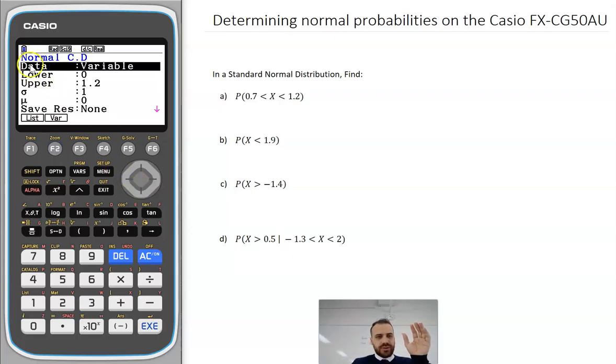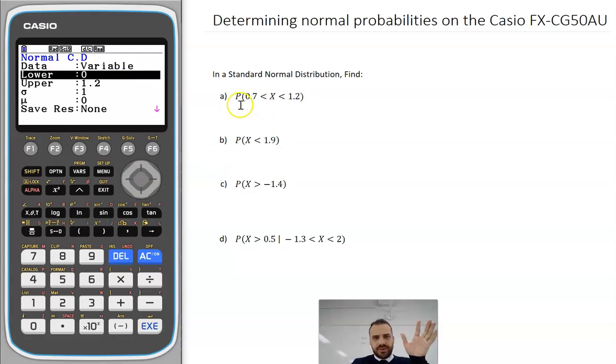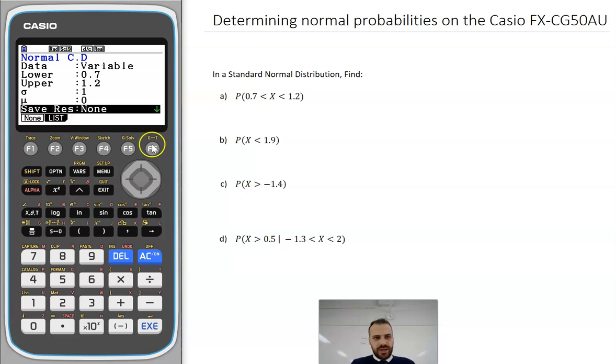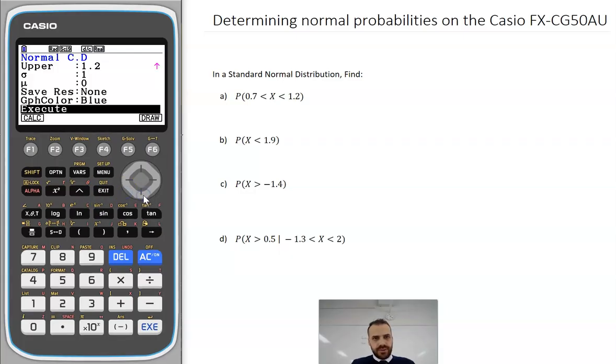Let's take a look at what we've got. Data variable, that's what we want. Lower, so our lower bound here is 0.7, so I'll type that in. Our upper bound is 1.2. Now our standard deviation is 1 because it's a standard normal distribution, and our mean is 0. Arrow down a couple of times, click on this button here. You can see it's got this little draw here, click draw.